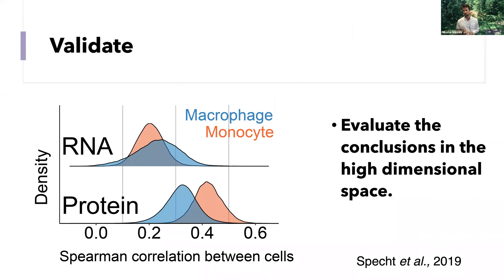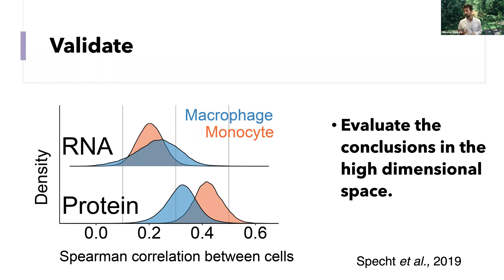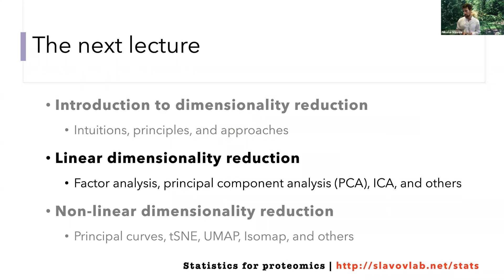Dimensionality reduction is useful for generating hypotheses, but these hypotheses need to be further evaluated in the high-dimensional data. One example of such validation is computing pairwise similarity between cells in the high-dimensional data and plotting those pairwise similarities as distributions. In this case, we found that the observations from the low-dimensional joint projection held in the higher-dimensional data set — but this doesn't necessarily need to be the case always. It's important that when we formulate hypotheses based on the low-dimensional projection, we go and test those in the high-dimensional space as well.